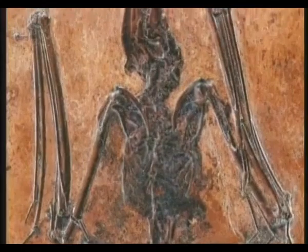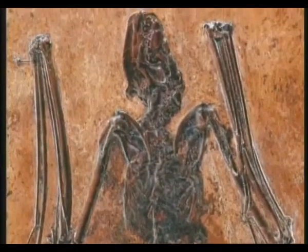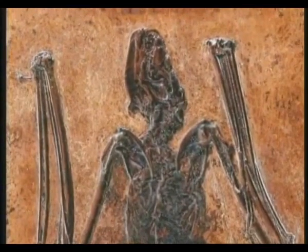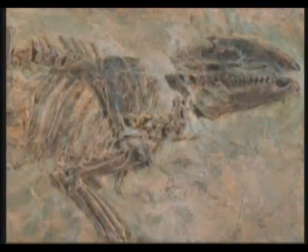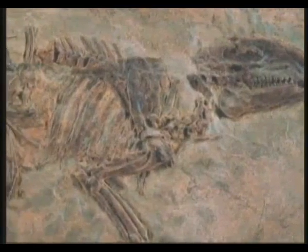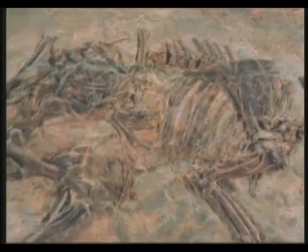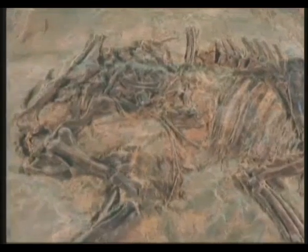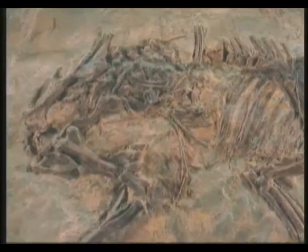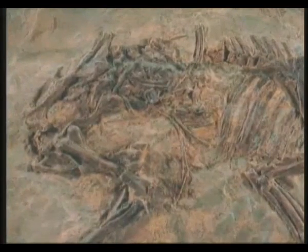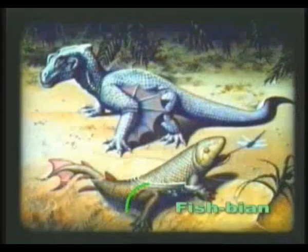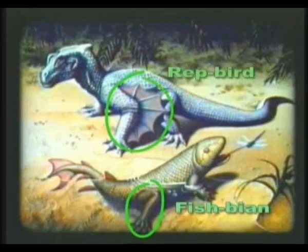When fossil evidence is examined, it is clear that the different species of living things suddenly appeared in the world in the same form that they exist in today, with no evolutionary link between them. The theory of evolution claims that there must be intermediate species between living species, but there are no traces of these.